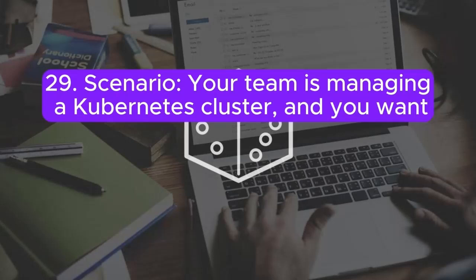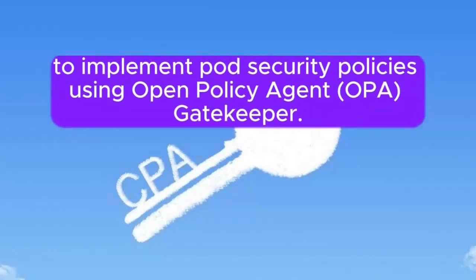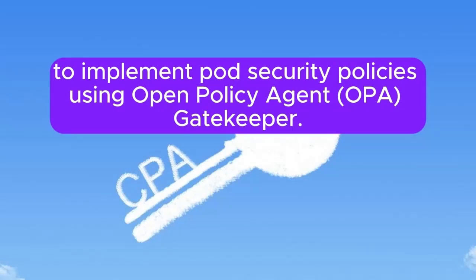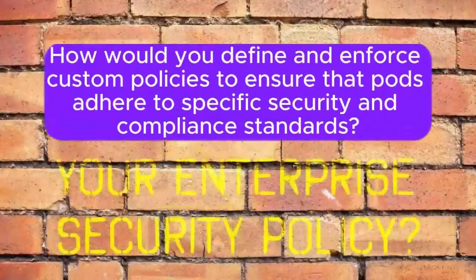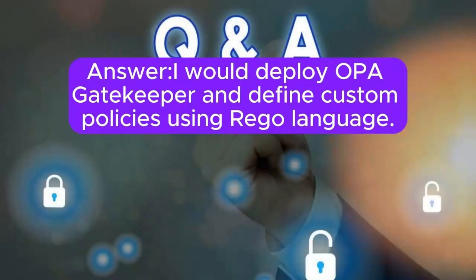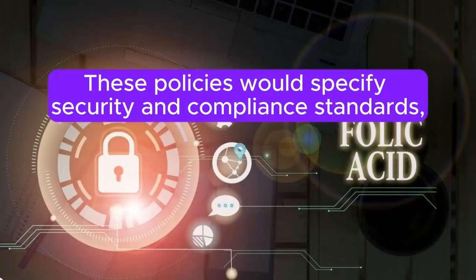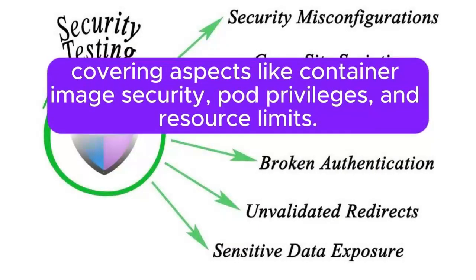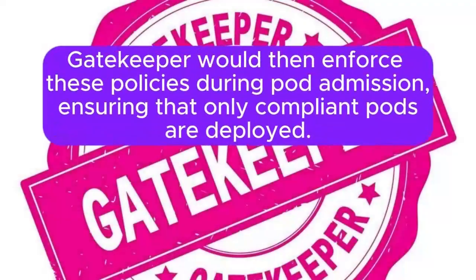Scenario 29: Your team is managing a Kubernetes cluster and you want to implement pod security policies using Open Policy Agent (OPA) Gatekeeper. How would you define and enforce custom policies to ensure that pods adhere to specific security and compliance standards? Answer: I will deploy OPA Gatekeeper and define custom policies using the Rego language. These policies would specify security and compliance standards, covering aspects like container image security, pod privileges, and resource limits. Gatekeeper would then enforce these policies during pod admission, ensuring that only compliant pods are deployed.